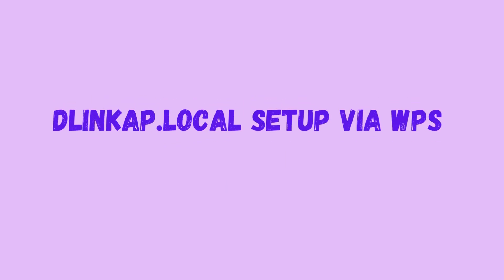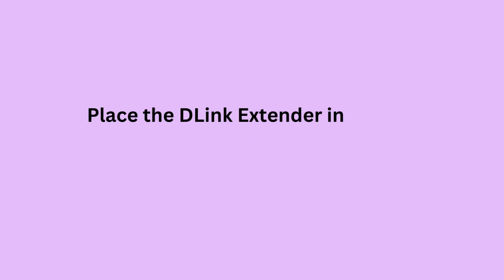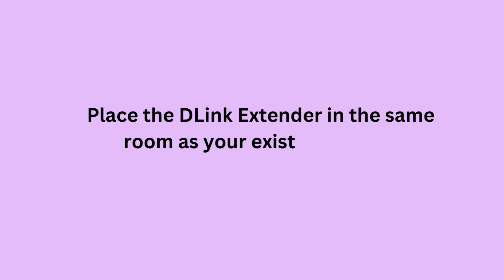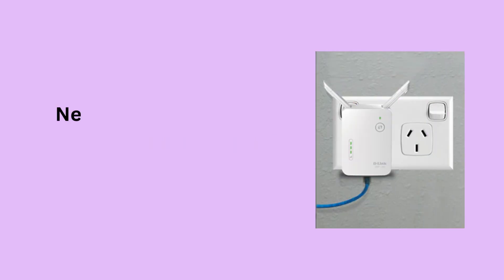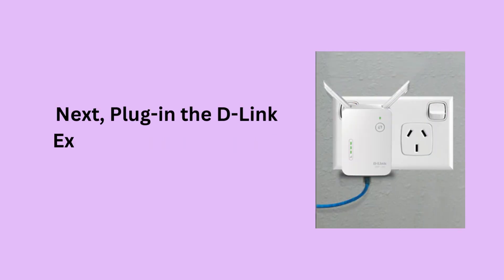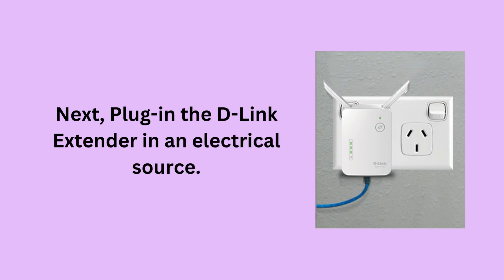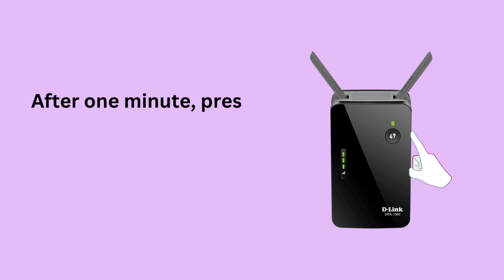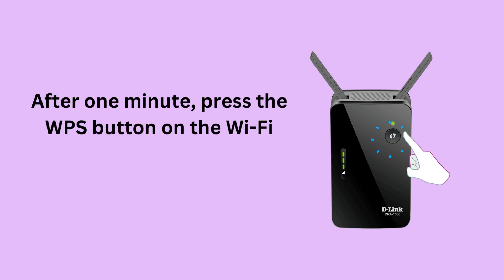D-Link dlinkop.local setup via WPS. Place the D-Link extender in the same room as your existing router. Next, plug in the D-Link extender into an electrical source. After one minute, press the WPS button on the Wi-Fi router.